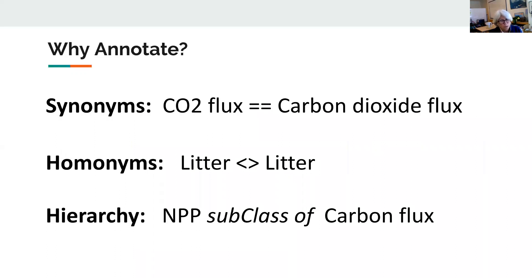Annotations are really good at finding synonymous concepts. Assume that one dataset uses a phrase like 'carbon dioxide flux' and another uses 'CO2 flux.' An information system can recognize through the annotations that those datasets are actually about the same concept, if they've been identified with the same identifier. Annotation can also disambiguate terms. If datasets have been annotated, the system can help provide only the results relevant to your intended meaning. So if you're searching for datasets about litter as in plant litter, other irrelevant terms like garbage or a group of animals born together can be eliminated from your search results, because each distinct type of litter would be associated with a different identifier.